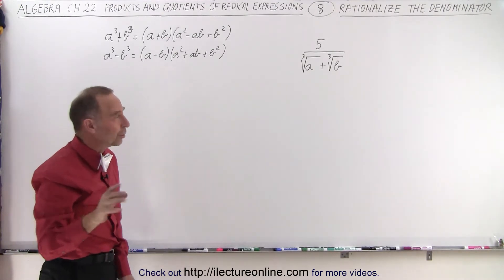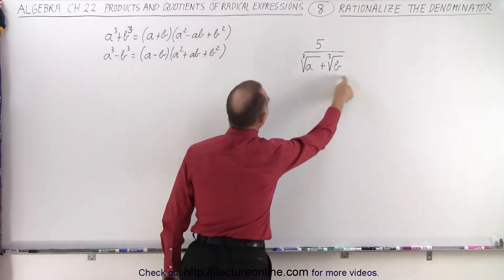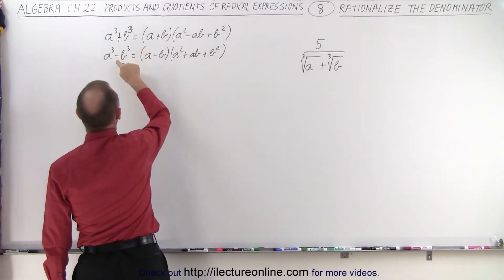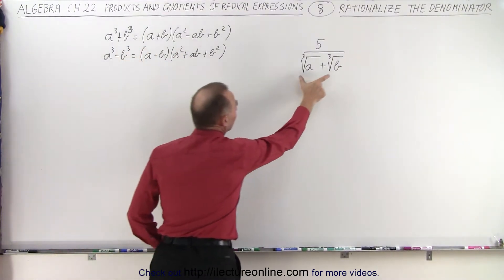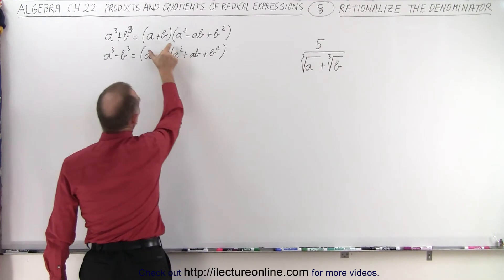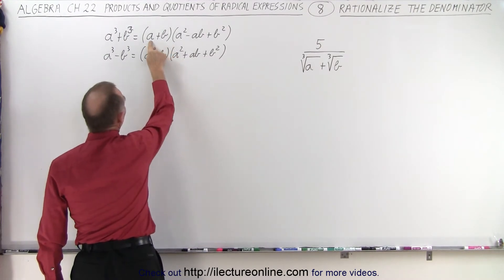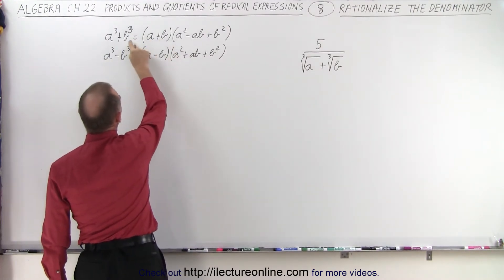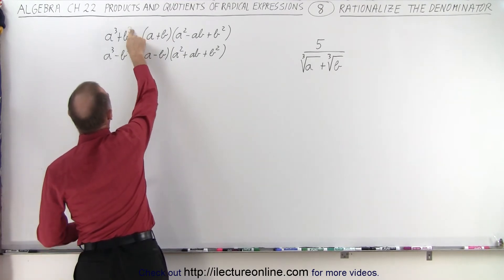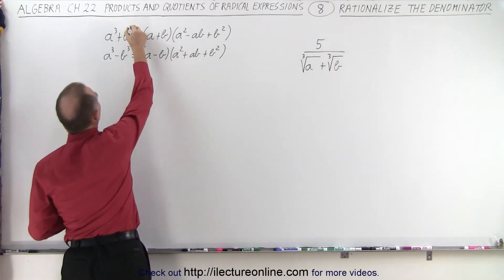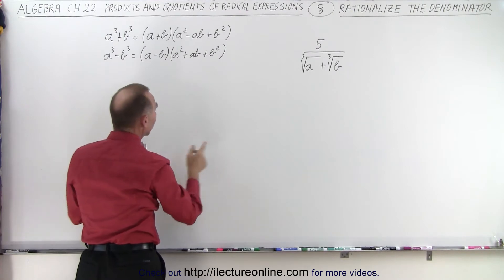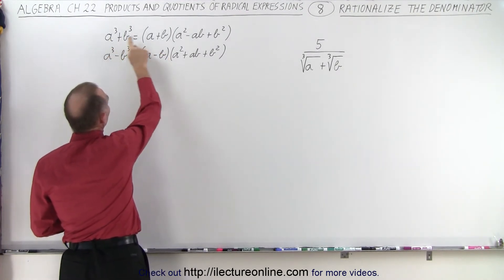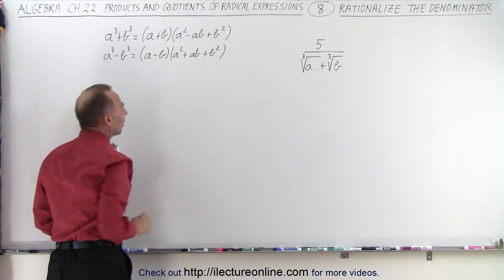Essentially what we're trying to do is take this denominator and make it look like one of those factored forms. This here is the same as what we have — this is the cube root of a, and this is the cube root of b. Note: that should be a cube, not a square.